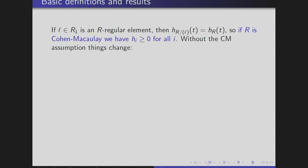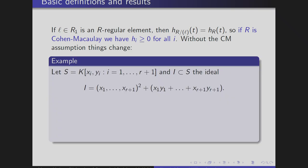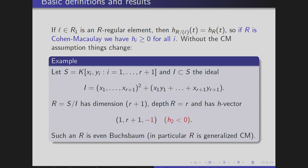However, without the Cohen-Macaulay assumption, things change. Here is an example: if you take a polynomial ring in 2R+1 variables and take this ideal, one can check that R has dimension R+1, and the H-vector has H_2 negative. Such a ring is even Buchsbaum, and in particular generalized Cohen-Macaulay — it is Cohen-Macaulay on the punctured spectrum.